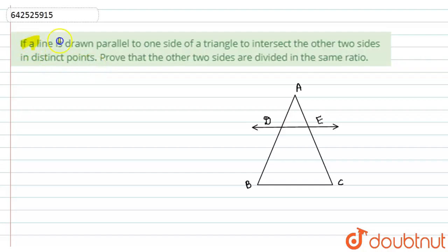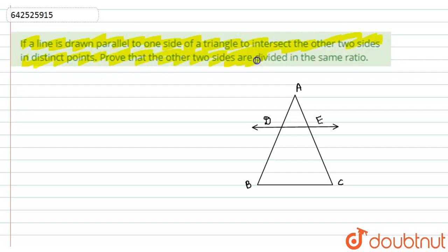Here we have given: if a line is drawn parallel to one side of a triangle to intersect the other two sides in distinct points, then prove that the other two sides are divided in the same ratio.